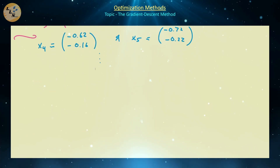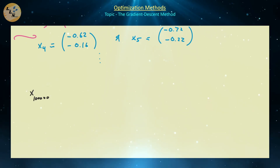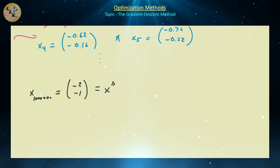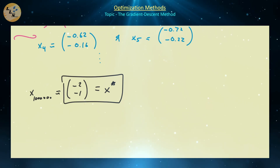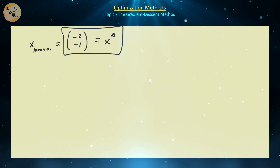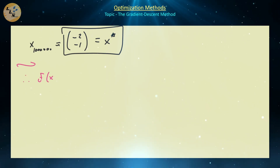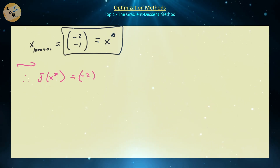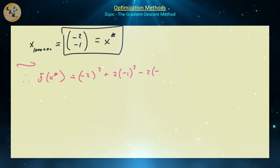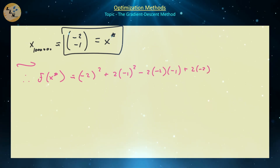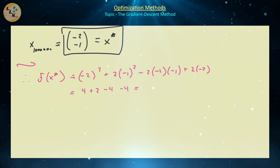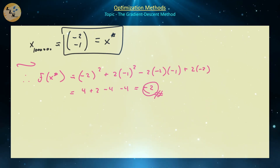If you continue this iteration all the way out, eventually the solutions stabilize. In particular, at something like x_{1,000,000}, you find approximately the vector (-2, -1), which is our optimal solution — verifiable with analytical methods. Plugging x* = (-2, -1) into the objective function: 2(-2)² + 2(-1)² - 2(-2)(-1) + 2(-2) = 4 + 2 - 4 - 4 = -2. So the minimum value is -2, attained at (-2, -1).